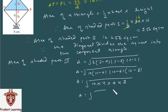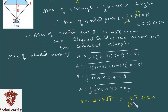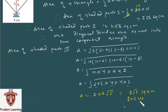Simplifying: write 10 as 2 × 5, so we have √[2 × 5 × 4 × 4 × 2]. The two 2s give 2 outside the root; 4 × 4 = 16 whose square root is 4. So the area = 2 × 4 × √5 = 8√5 square cm. Since √5 ≈ 2.236, the area is 8 × 2.236 ≈ 17.88 square centimeters.